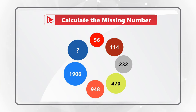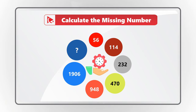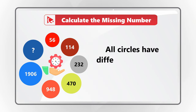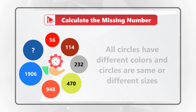Do you see the answer? Give yourself a little bit of time to see if you can come up with the solution. What's interesting about this problem is that all circles have different colors, and some circles have the same size while other circles have different sizes. But regardless, you need to select one of the following four choices.